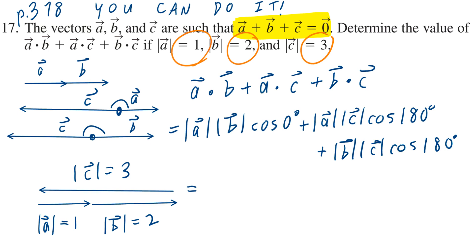So now, the rest of this is very doable. We're given the fact that the magnitude of A is 1, the magnitude of B is 2. Cosine of 0 is 1. Plus the magnitude of A is 1, the magnitude of C is 3. Cosine of 180 degrees is negative 1. The magnitude of B is 2, the magnitude of C is 3. Again, cosine of 180 is negative 1. Now, you can take the calculator. I'm going to do some mental math. I'll even break it down to two steps for you. 1 times 2 times 1 is 2. 1 times 3 times negative 1 is negative 3. 2 times 3 times negative 1 is negative 6. 2 minus 3 minus 6 is exactly negative 7.